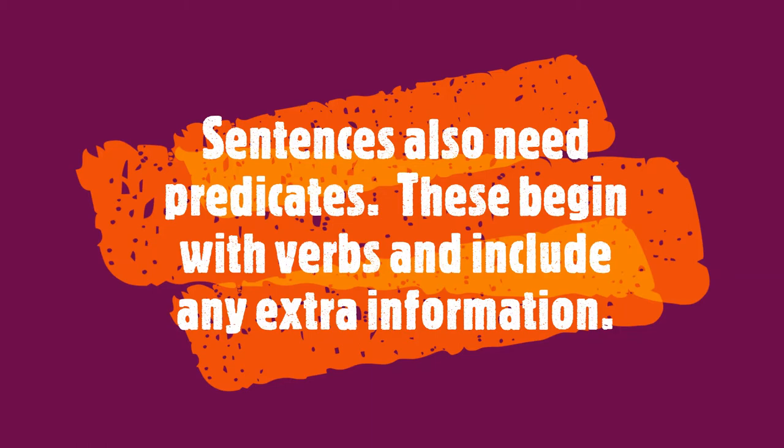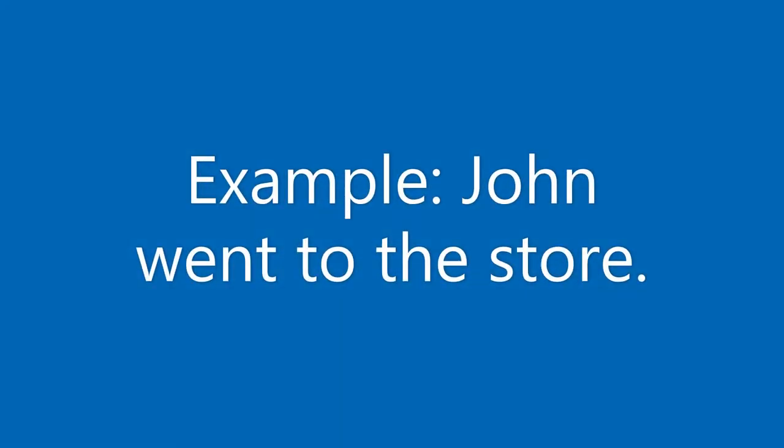and include any extra information like phrases, adjectives, or adverbs. Let's look at an example of a complete sentence: 'John went to the store.' John is the subject — who or what the sentence is about. 'Went to the store' is the predicate; 'went' is the main verb and 'to the store' is a prepositional phrase adding information to the overall sentence.